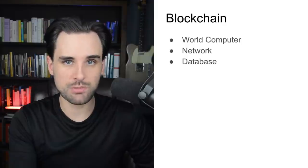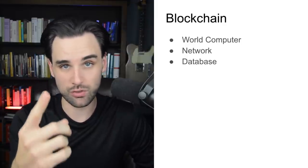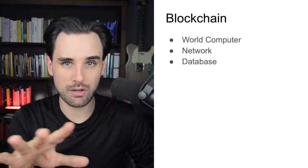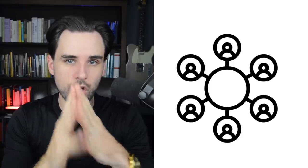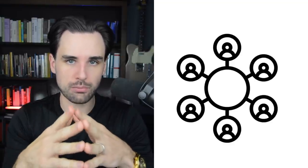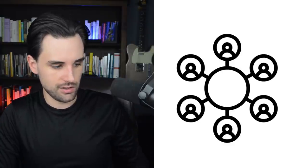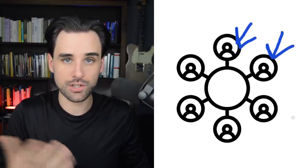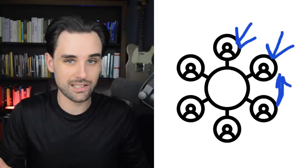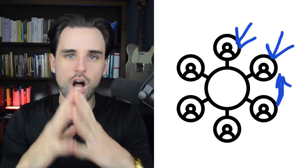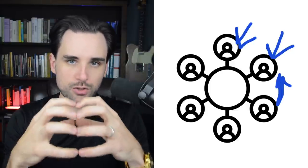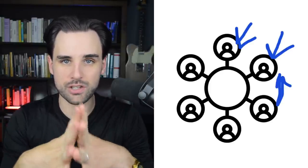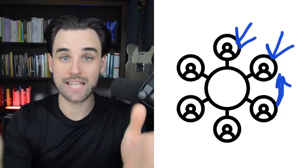The blockchain assumes a lot of the responsibilities that a single web server would normally handle — like keeping application code on a web server and keeping data on another. But the blockchain delegates this responsibility across all nodes in the network, distributing code and data to all different nodes. Each node gets a copy of the code and the data on the blockchain, and they all work together to run the code and make sure that data doesn't change and is secure. All the data is contained in bundles called blocks, which are chained together to make up the public ledger.